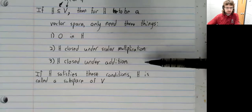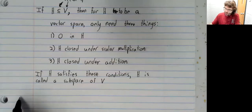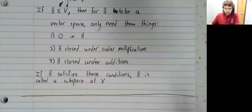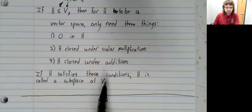H has to be closed under addition. If we have these three properties, then H is a vector space, and we call it a subspace of V.